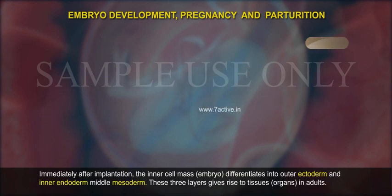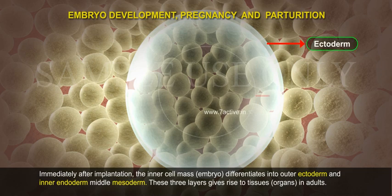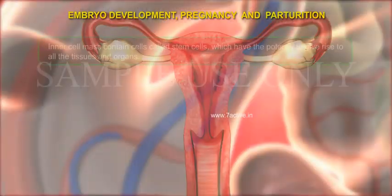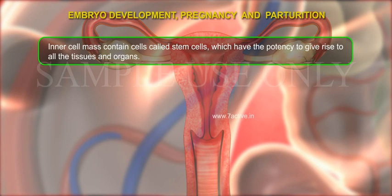Immediately after implantation, the inner cell mass of the embryo differentiates into an outer ectoderm and inner endoderm, with mesoderm in between. These three layers give rise to tissues and organs in adults. The inner cell mass contains cells called stem cells, which have the potency to give rise to all the tissues and organs.